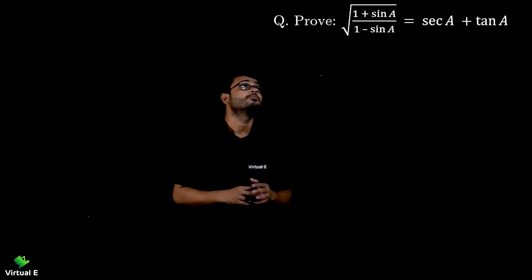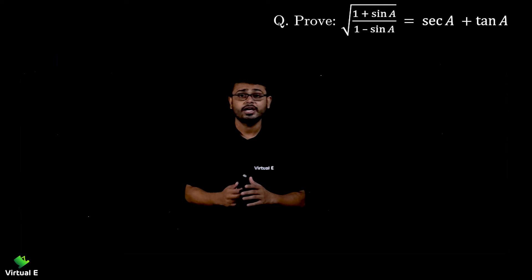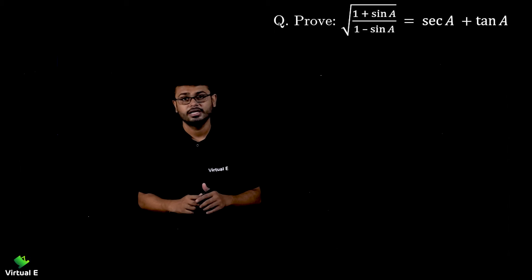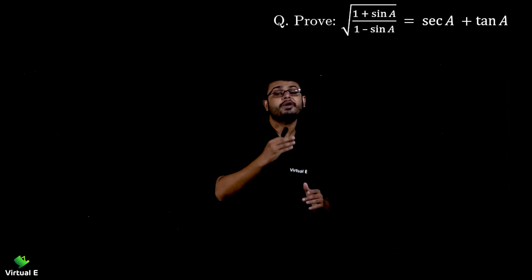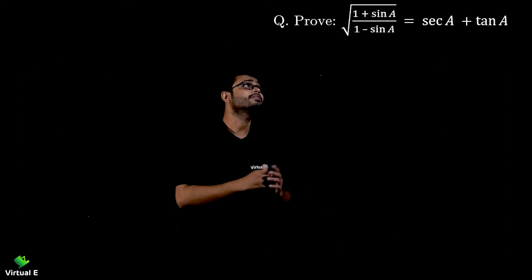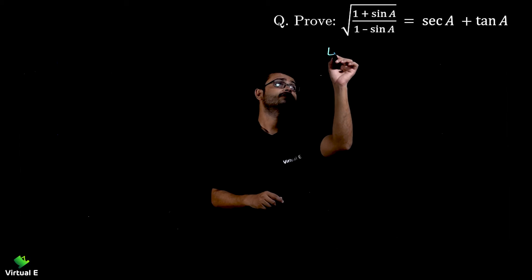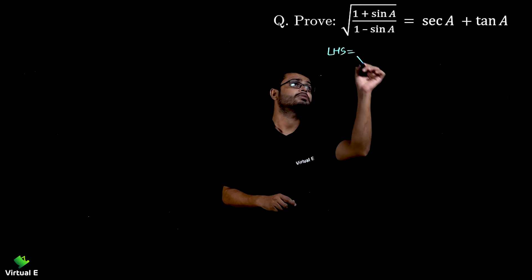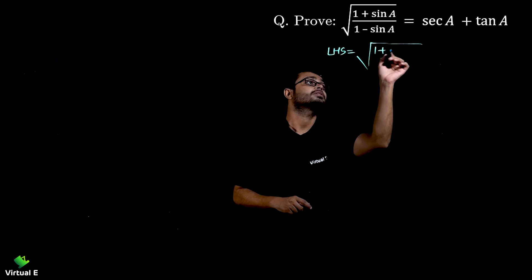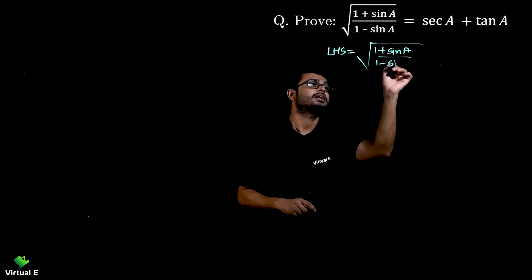Let's start with one more question: prove that the square root of (1 + sinA) / (1 - sinA) is equal to secA + tanA. We can see that there is a square root given — we are discussing this square root for the first time, so let's see how to deal with it. LHS is equal to square root of (1 + sinA) / (1 - sinA).